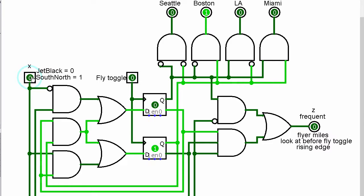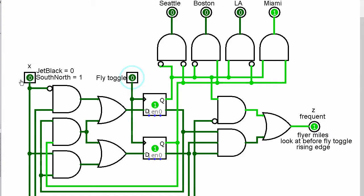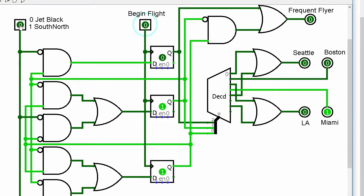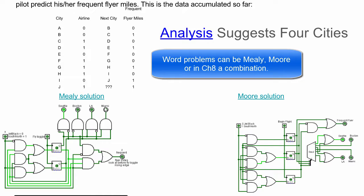In Mealy, this is representing that I'm going to get zero if I fly to the next spot on South North — I'll get zero no matter what. This is predicting I'm going to get zero no matter what. So let's fly Jet Black and toggle, and I'm flying to Miami. It's going to tell me I got zero frequent flyer miles in Moore. But in Mealy, it's saying I'm going to get one frequent flyer mile if I fly Jet Black — this is the predictive nature of Mealy. So I fly again Jet Black and I get one frequent flyer mile. Now they're in agreement. So in summary: Mealy tells me about the frequent flyer mile I'm going to get before I fly; Moore tells me about the frequent flyer mile I got after I arrive.